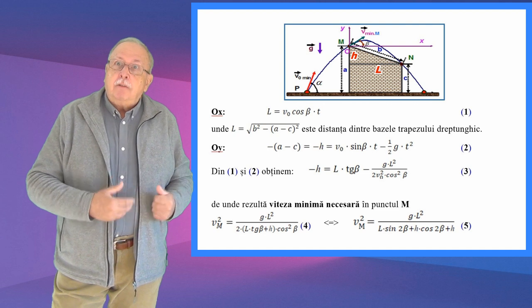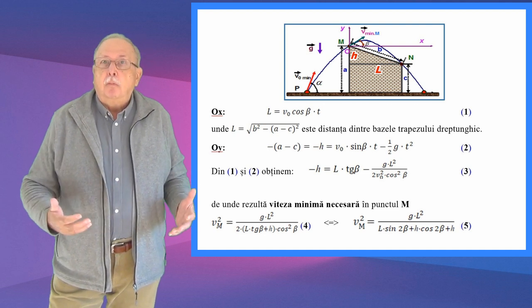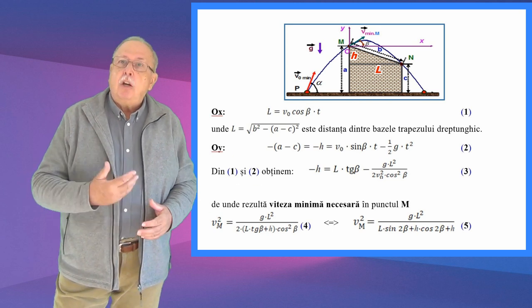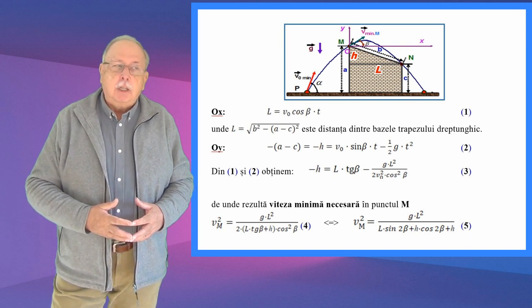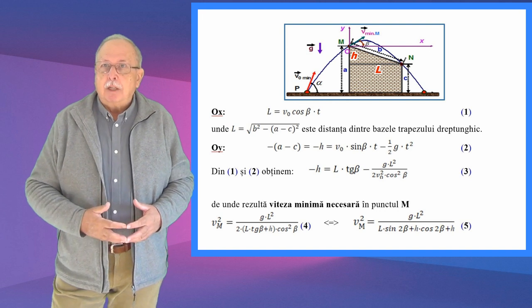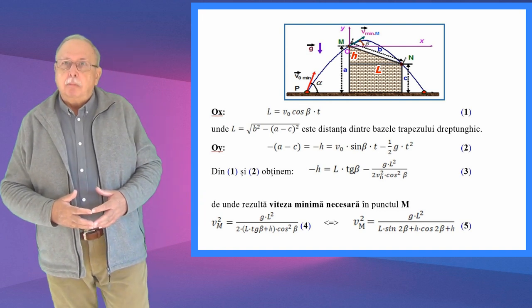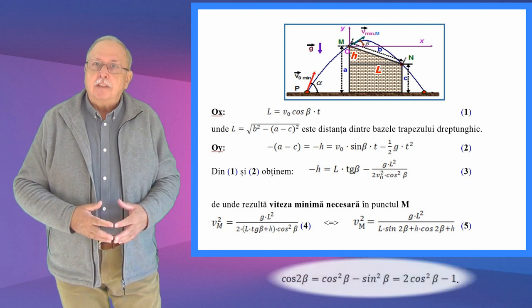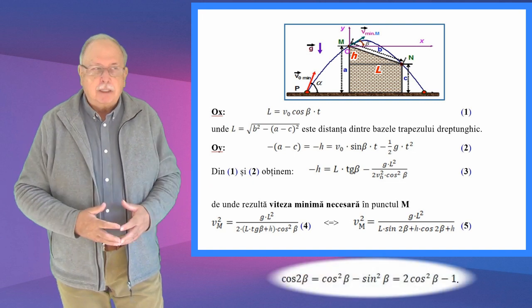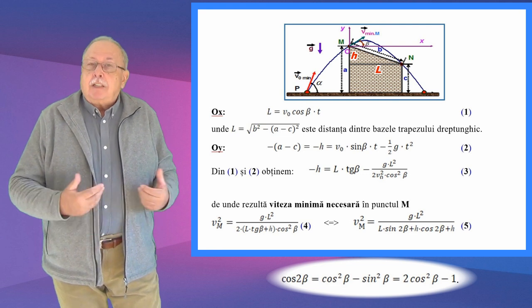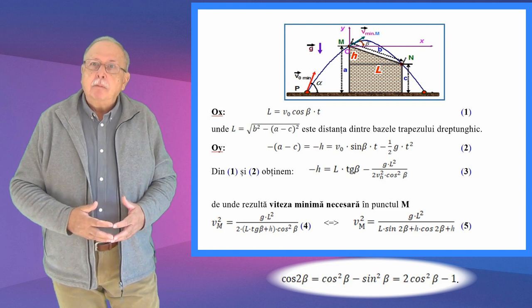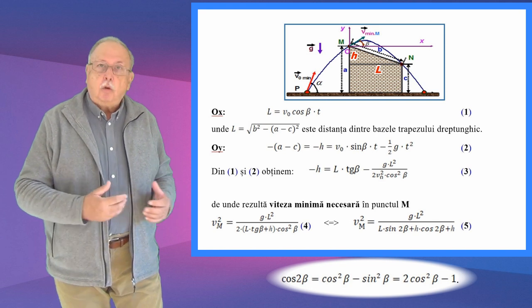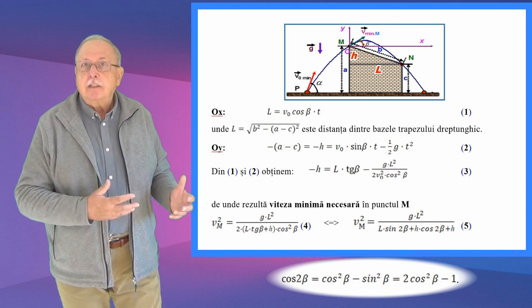Din relația 3 rezultă că viteza pietrei în punctul M, VM pătrat, este egală cu G·L² supra (2·(L·tangentă de beta + H)·cosinus² de beta), relația numărul 4. Folosind formula trigonometrică a unghiului dublu — cosinus de 2beta egal cu 2·cosinus² de beta minus 1 — putem scrie VM² egal cu G·L² supra (L·sinus de 2beta + H·cosinus de 2beta + H), relația numărul 5.